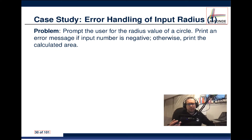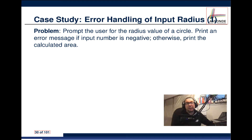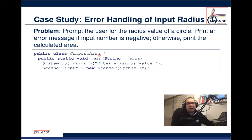We're going to look at a typical example — easy conceptually but important from an implementation perspective. We're going to prompt the user for the radius value of a circle, print an error message if the input number is negative, and otherwise print the calculated area. We have a Java file called ComputeArea.java and the class is called ComputeArea.